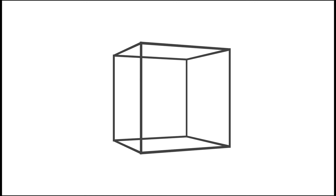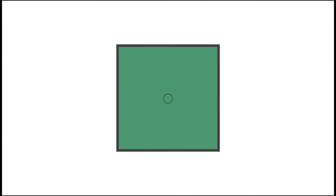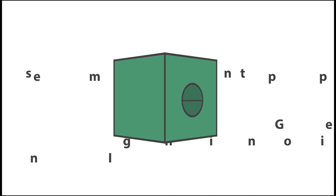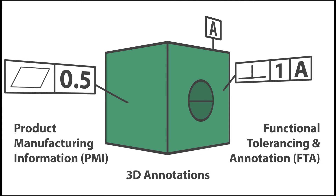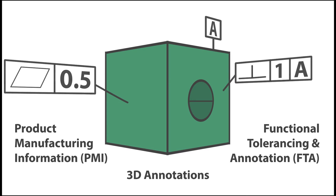The average model is highly complex and contains lots of information. There are many elements that make up the modern 3D model. All of these elements come together to create product manufacturing information, or PMI, also known as 3D annotations.